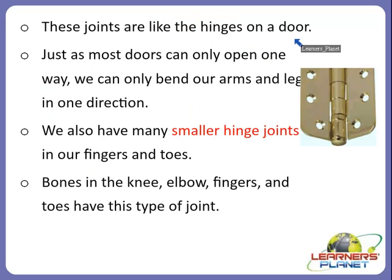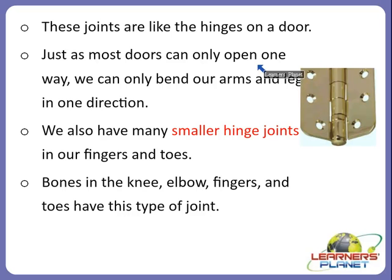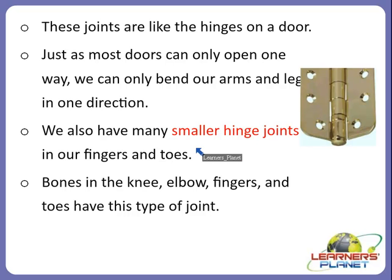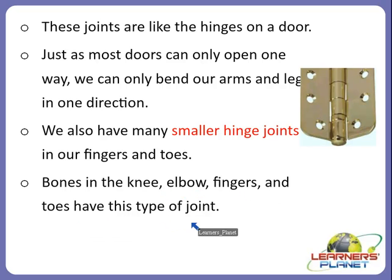These joints act like the hinges on a door. Just try to open and close a door — you can see the hinges move. Just as most doors can only open one way, we can only bend our arms and legs in one direction, not all directions. We also have many smaller hinge joints in our fingers and toes. The bones in the knee, elbow, fingers and toes all have hinge joints.